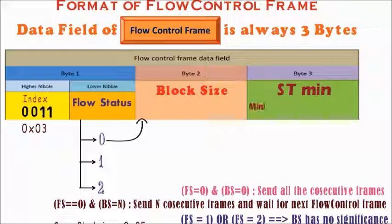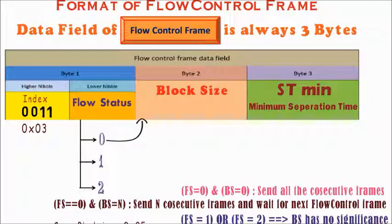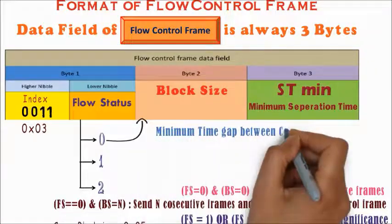STMIN stands for Minimum Separation Time. As its name indicates, this field tells what should be the minimum time gap between consecutive frames.